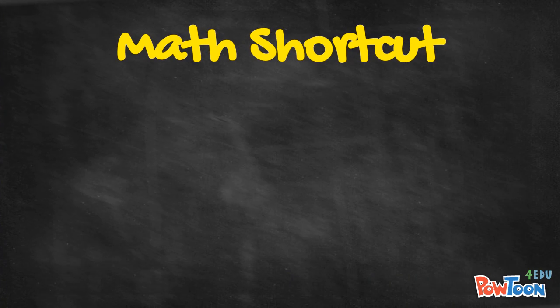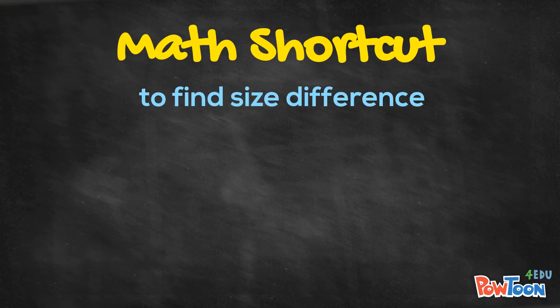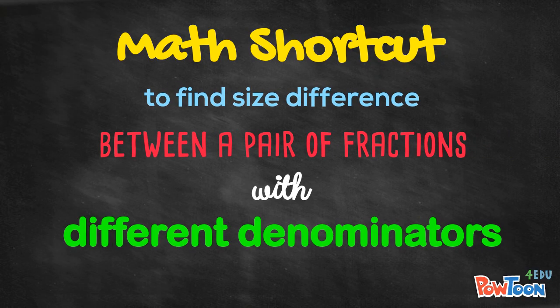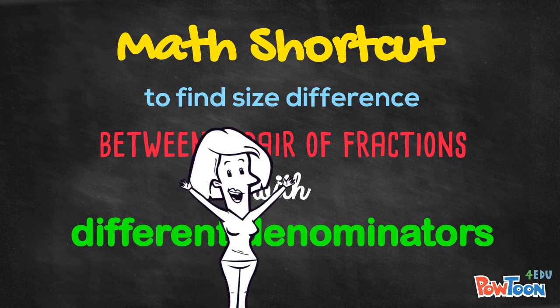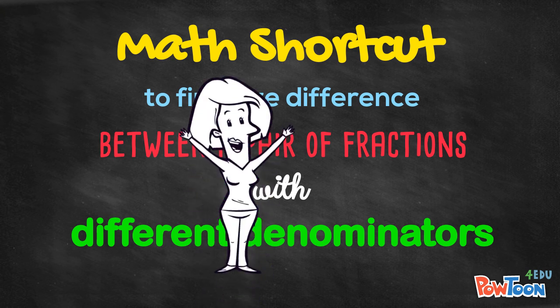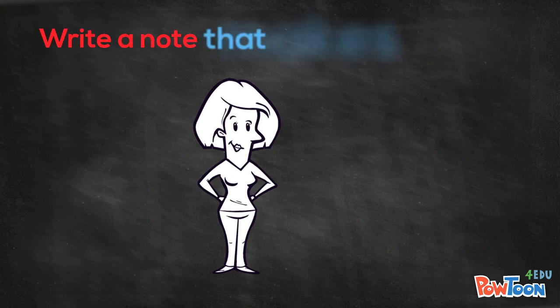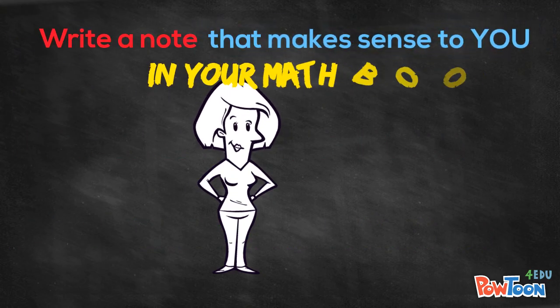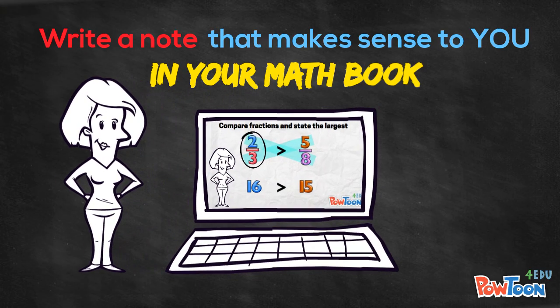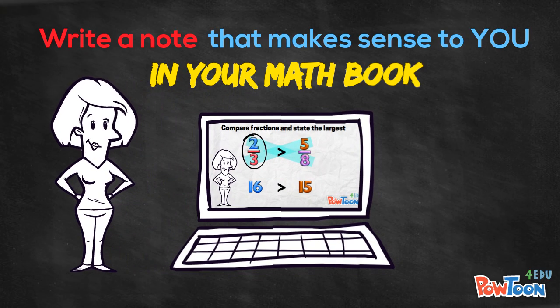This is a mathematical shortcut to finding the size difference between a pair of fractions with different denominators. I really want you to understand what you're doing. So before trying this out, write an explanation that makes sense to you in your math book. You can rewind the video and use my examples if you like.